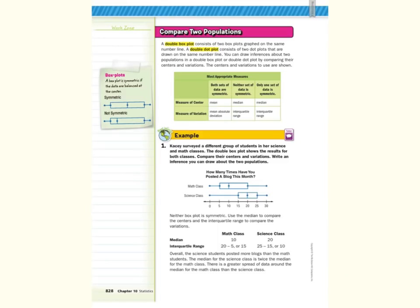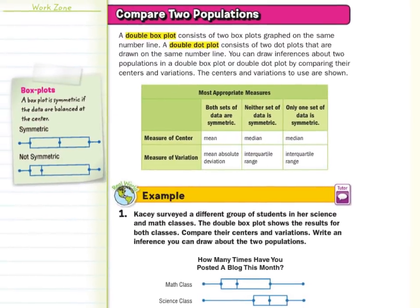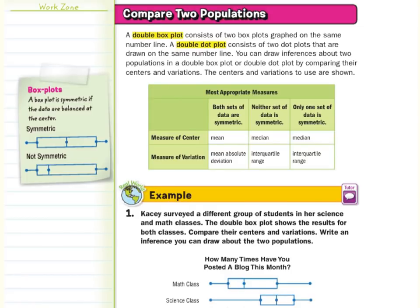Now as we look to compare two populations: a double box plot consists of two box plots graphed on the same number line. A double dot plot consists of two dot plots drawn on the same number line. You can draw inferences about two populations in a double box plot or double dot plot by comparing their centers and variations. This table is really important in our lesson.